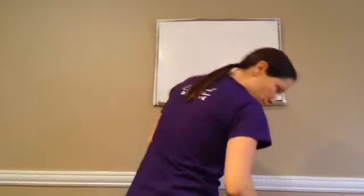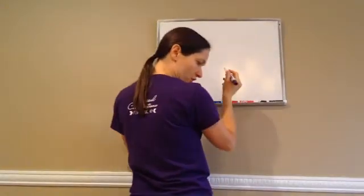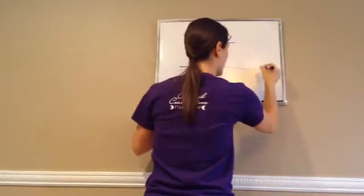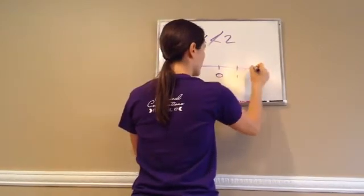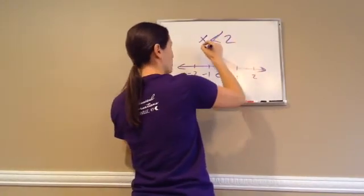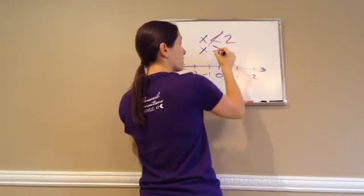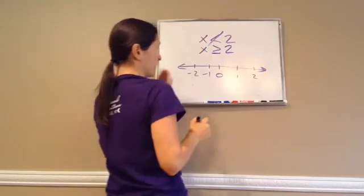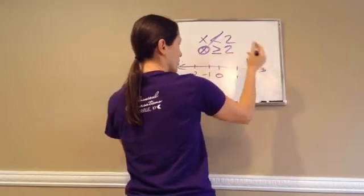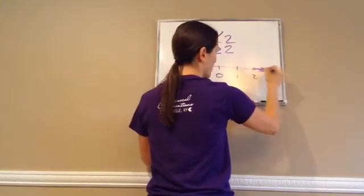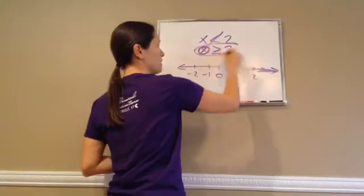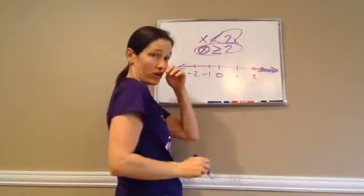Let's do one of the graphing ones. It says draw a number line and graph the solution. X is not less than 2. So if X is not less than 2, then that means X is greater than or equal to 2. So we graph greater than or equal to 2 — here's my 2, and I graph everything greater than and also equal to 2.